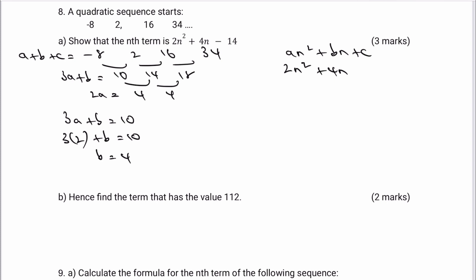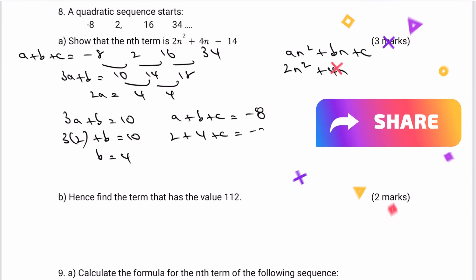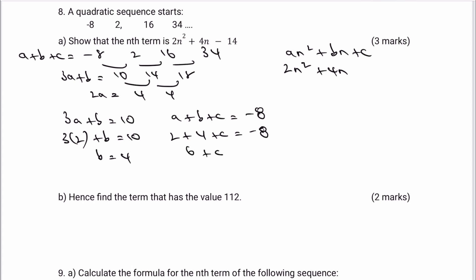Finally, c is found using a plus b plus c equals minus eight. We know a is 2 and b is 4, so 6 plus c equals minus eight. Taking away 6 from both sides gives c equals minus 14. So the nth term is 2n squared plus 4n minus 14.